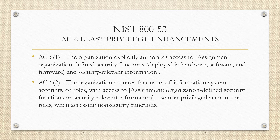For AC-6 Enhancement 1, the description reads: the organization explicitly authorizes access to defined security functions and security-related information. Taking that principle of least privilege and making sure that access to a security function or security-related information, which you as an organization will define, is authorized — for example, through a role-based access control matrix. In our next slide or two, I'll get into what we should be looking for when performing an audit against these controls and enhancements.